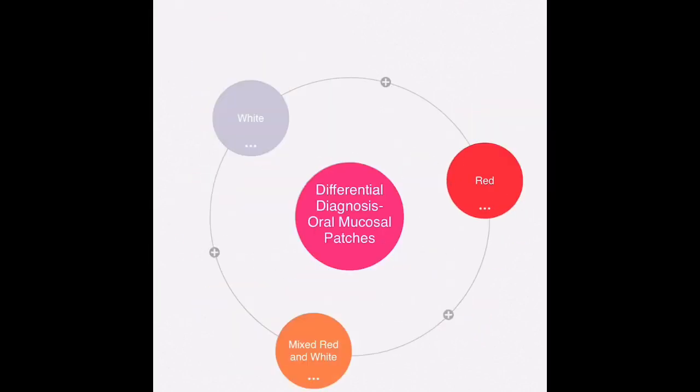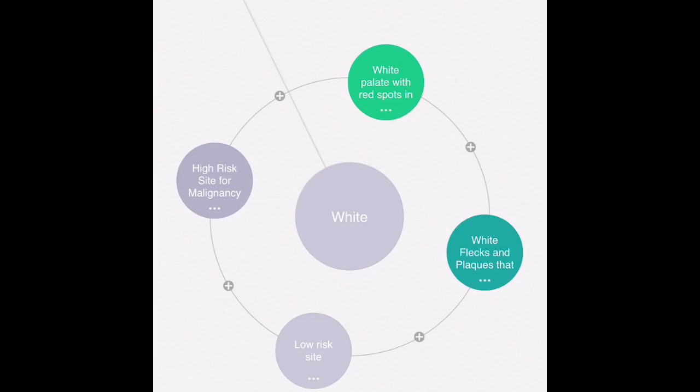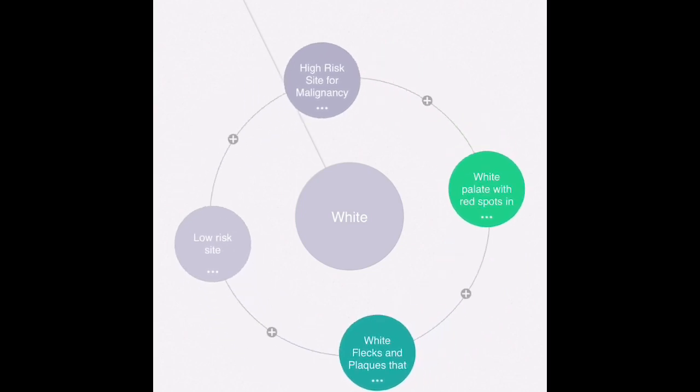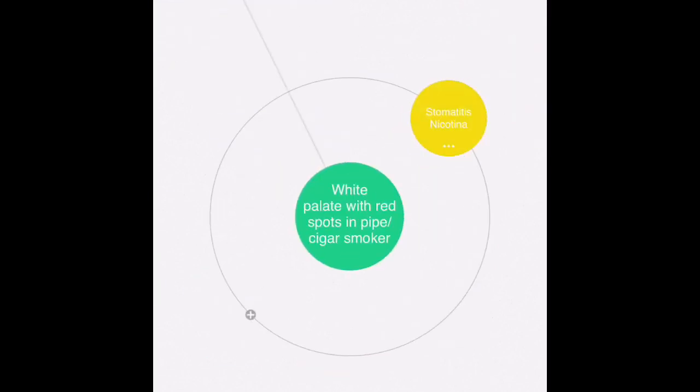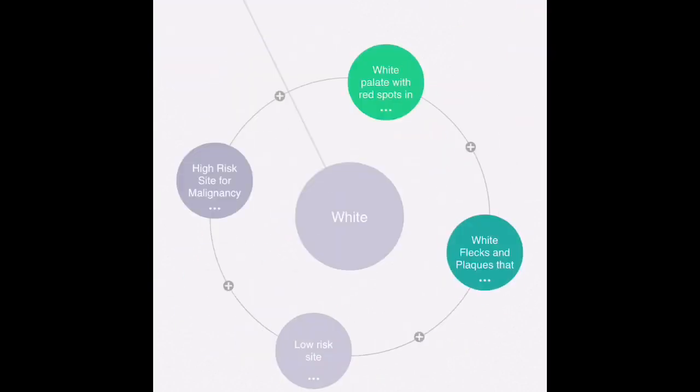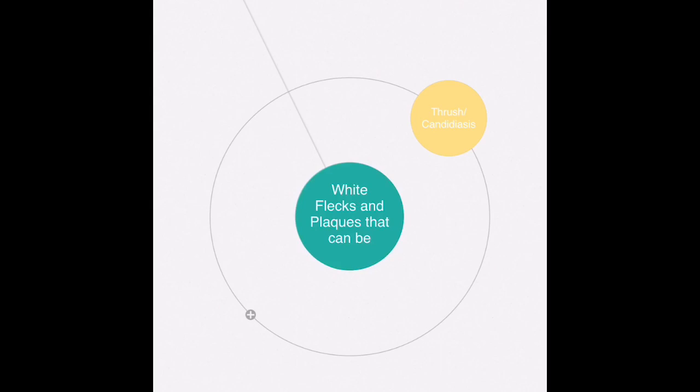Moving to white patches, if you notice the palate looks white in color and you notice some red spots in clusters, especially in a patient who is a pipe or cigar smoker, then this points towards stomatitis nicotina. The key thing about this kind of lesion is that it's not present on the surface that is covered by a denture or any kind of prosthetics.